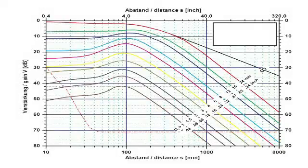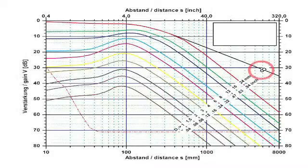Within the DGS diagram, the distance dependency of the echo amplitudes from large reflectors, in this case the back wall, and small reflectors, flat bottom holes having different diameters, is shown graphically.